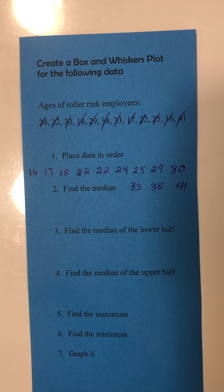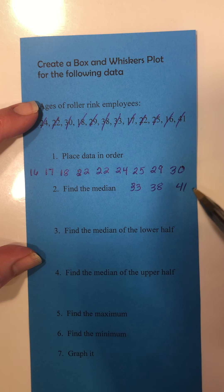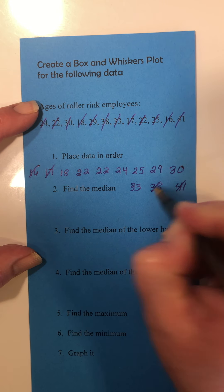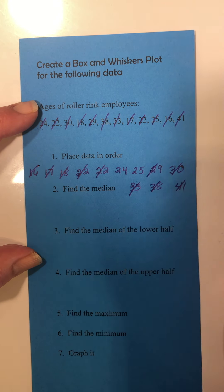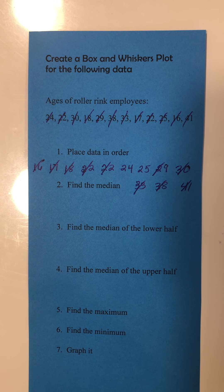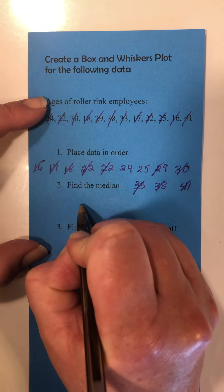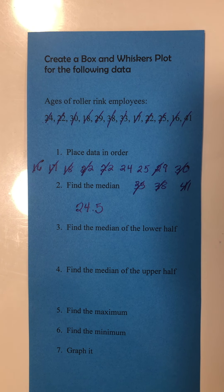The second step is to find the median. To find the median, we cross off the lowest and highest values until we get to the middle. We cross off low, high, low, high repeatedly. We are left with two numbers in the middle — 24 and 25 — so we add them and divide by two. The median of all data is 24.5.